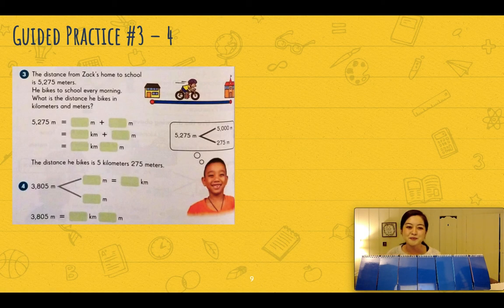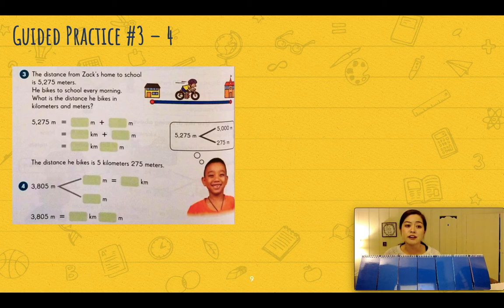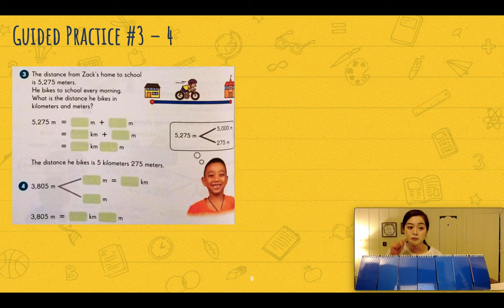Welcome back! Let's do number three together. It says the distance from Zack's home to school is five thousand two hundred and seventy-five meters. He bikes to school every morning. What is the distance he bikes in kilometers and meters? Let's put that number in our place value chart.